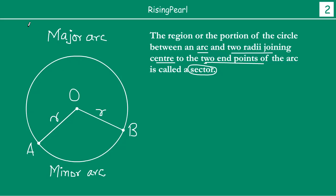When we use radius, that is the singular form. When you talk about two or more radii, you use the plural form, which is pronounced as radii — R-A-D-I-I. That is why we have written radii. So a sector is basically a part of a circle — a portion, an area of a circle — between two radii joining the center to the two endpoints of an arc, and the arc itself. That space, that part of the circle, is called a sector.